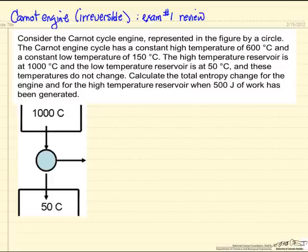Now the question is: what's the entropy change for the engine, and what's the entropy change for the high temperature reservoir when 500 joules of work have been generated? So 500 joules of work coming out. We'll put a minus sign here because we're removing energy.